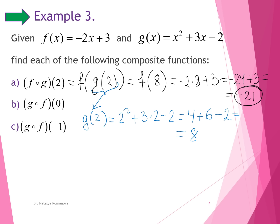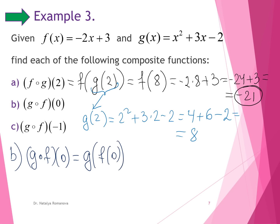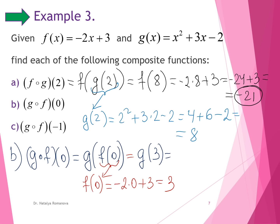Example b: we find the composition of g and f at x equals 0, written as g of f of 0. The inner function f of 0 equals negative 2 times 0 plus 3 equals 3. Then g of 3 equals 3 squared plus 3 times 3 minus 2, giving us 9 plus 9 minus 2 equals 16. That is the answer.